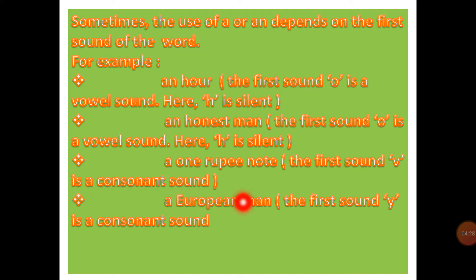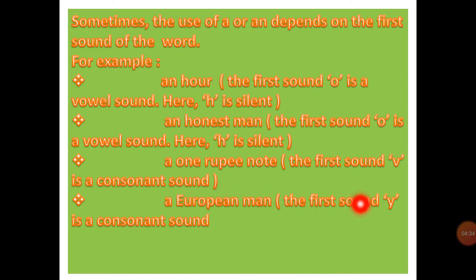A European man. Here, as per the rule, an would come. But here a is coming, because the first sound Y is a consonant sound. That is why a will come: a European man.